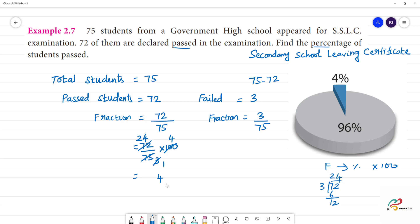24 into 4, 4 is 4, 4 is 16, 4 plus 4 into 2, 8 plus 1 is 9. 96 percentage passed is 9.